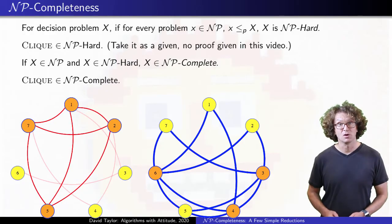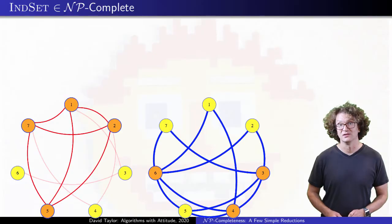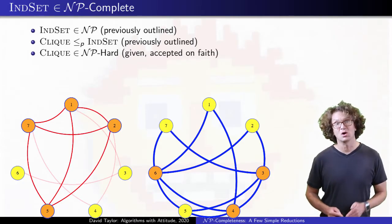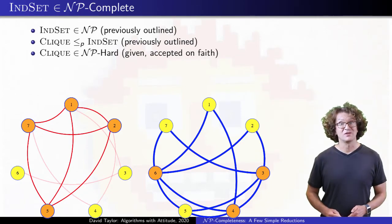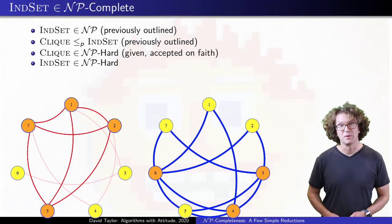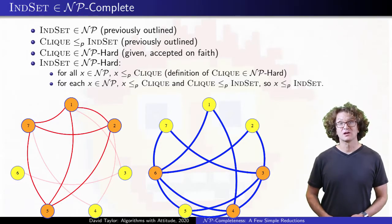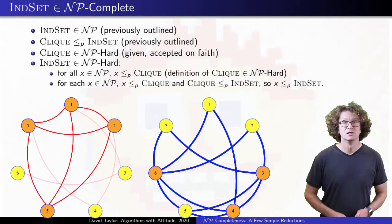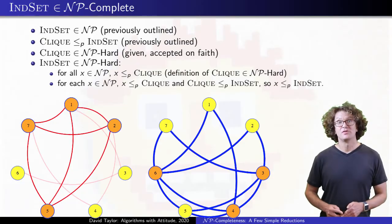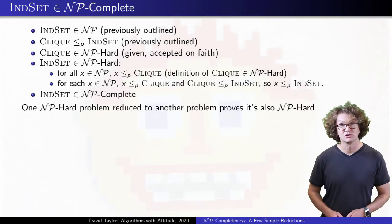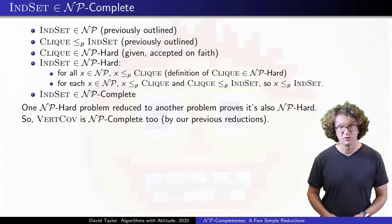Even though I am not going to prove that clique is NP-hard, if we accept that it is, it becomes much easier to prove other problems are NP-hard too. We already know that independent set is in NP, and that clique reduces to independent set, and we are taking it as a given that clique is NP-hard. Intuitively, if independent set is at least as hard as clique, and clique is NP-hard, so is independent set. More formally, we know that for any problem in NP it reduces to clique, and we know that clique reduces to independent set, so we can take the composite of those reductions to reduce any problem in NP to independent set in polynomial time. That proves independent set is NP-hard, and so it is NP-complete. Similarly, we have seen reductions from clique and independent set to vertex cover, so that is also NP-hard and NP-complete.